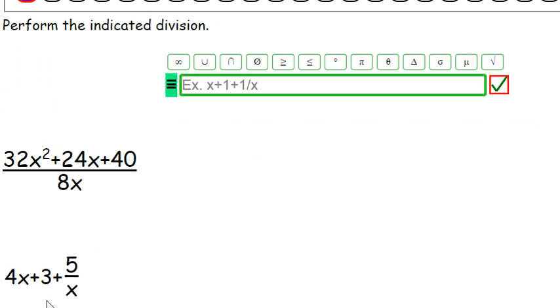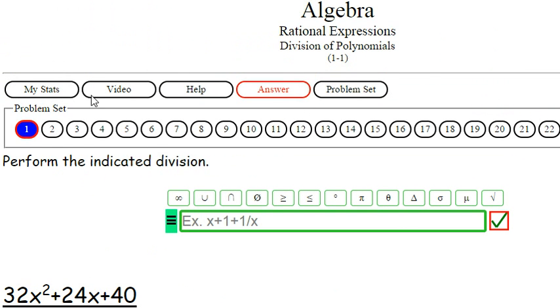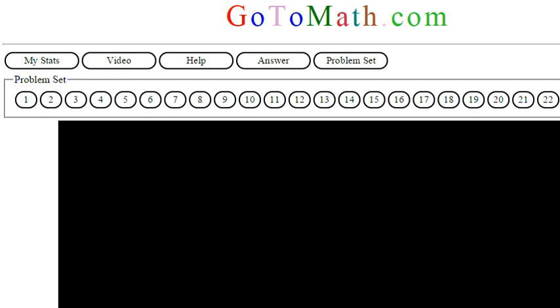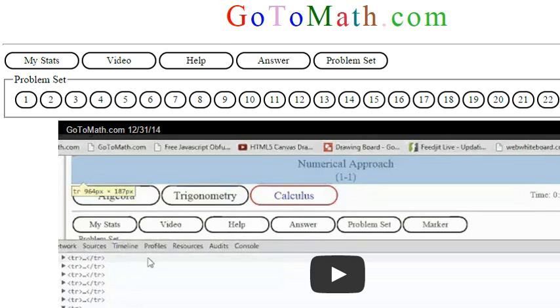So we got 4x plus 3 plus and then 5 over x. Right? Yup. I need to pay attention a little better. Okay. So we're over here at GoToMath.com. I'm trying to wake it up. Alright. See you later.